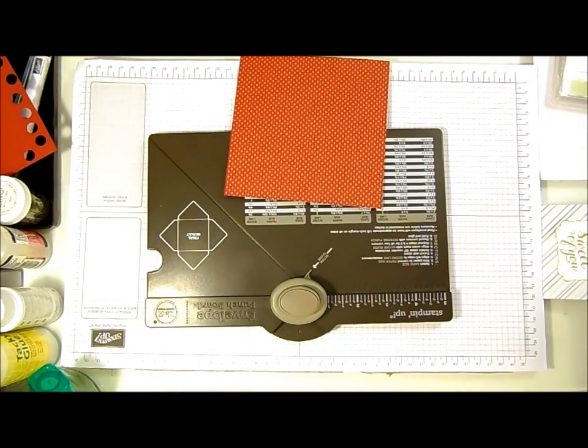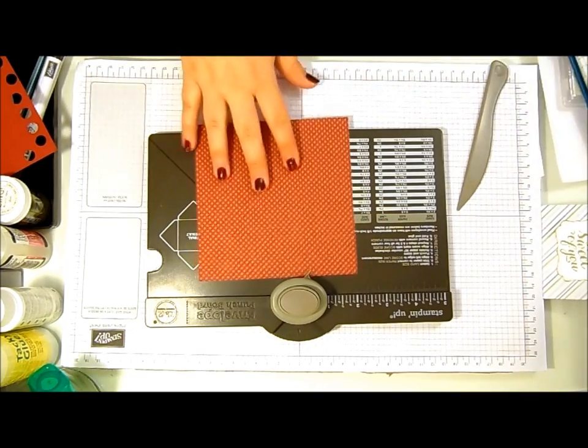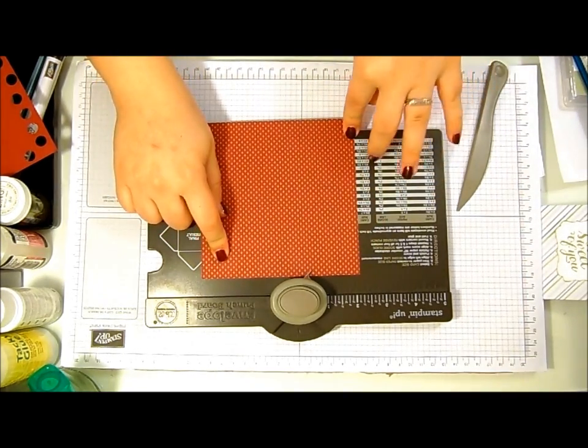Right, I've got my envelope punch board and my piece of cardstock. This piece of cardstock is cut to five and a half inches by five and a half inches.